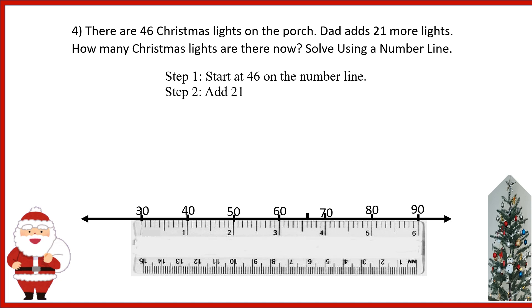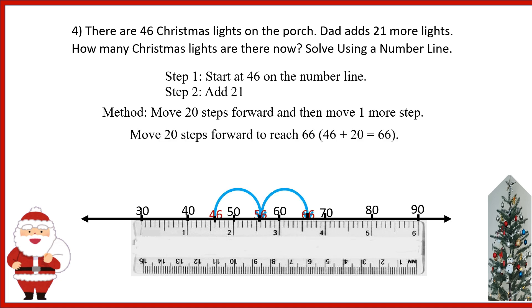Step 2: Add 21. Method is move 20 steps forward and then move 1 more step. From 46, move 20 steps forward to reach 66, then move 1 more step to reach 67. Therefore, the answer is there were 67 lights in all.